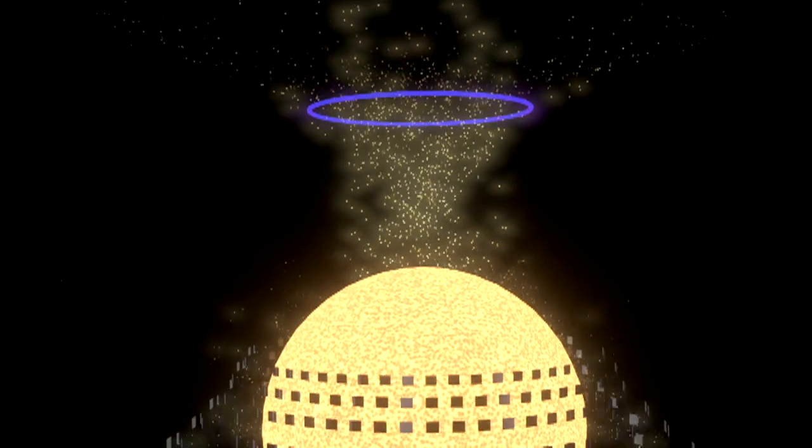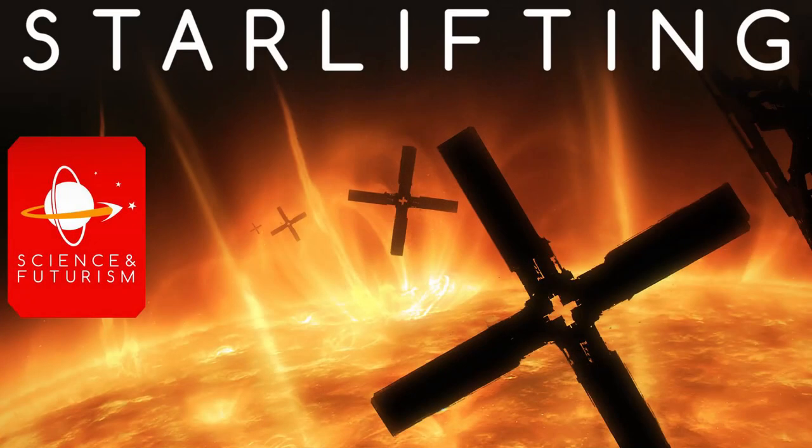See that episode for details, but that is one way to get the material you need for a more robust Dyson, without disassembling planets. You only have to extract from planets, asteroids, and moons what you need to get started.